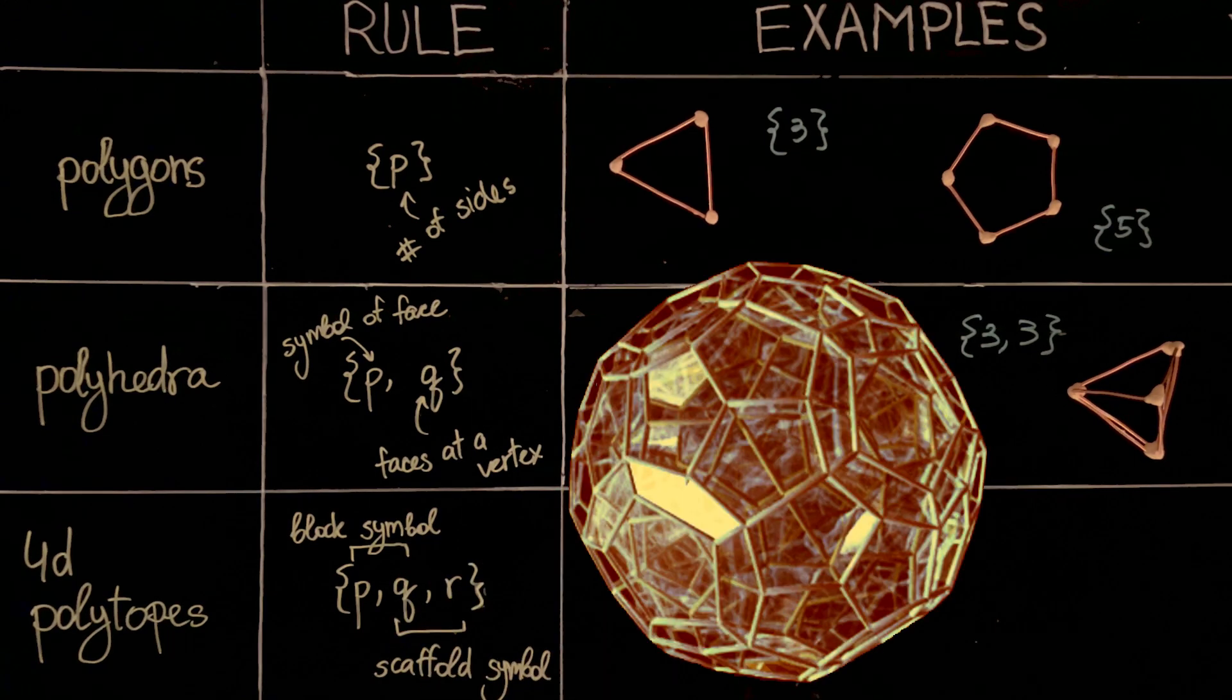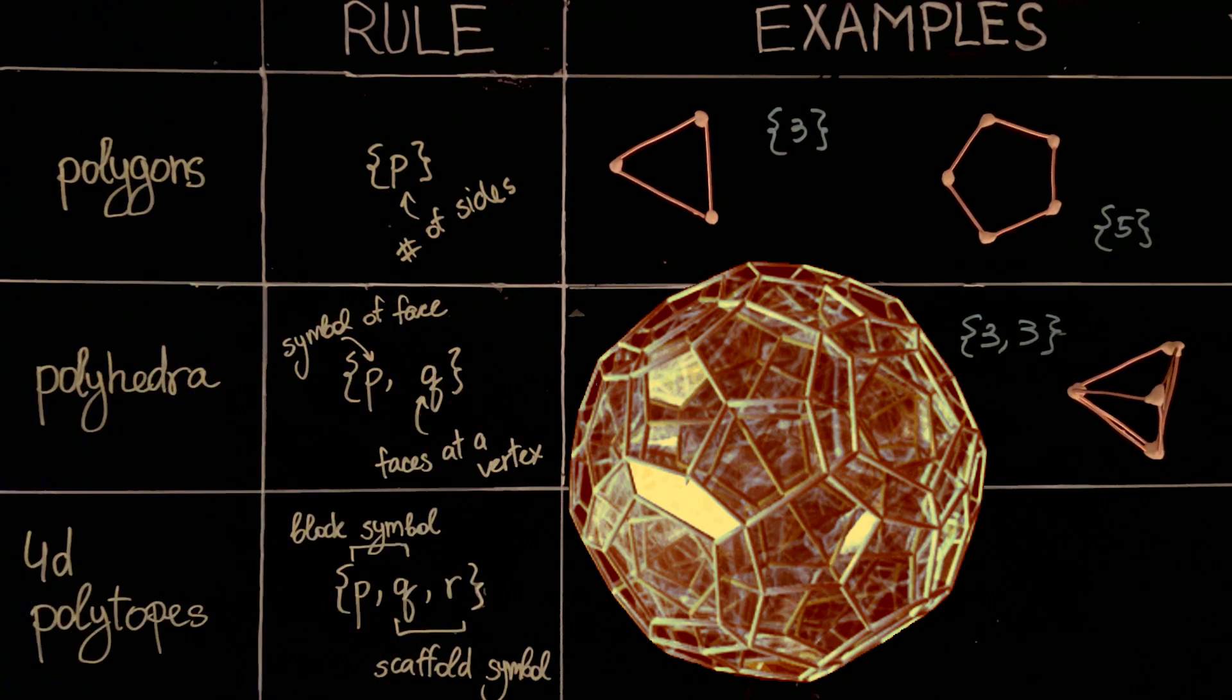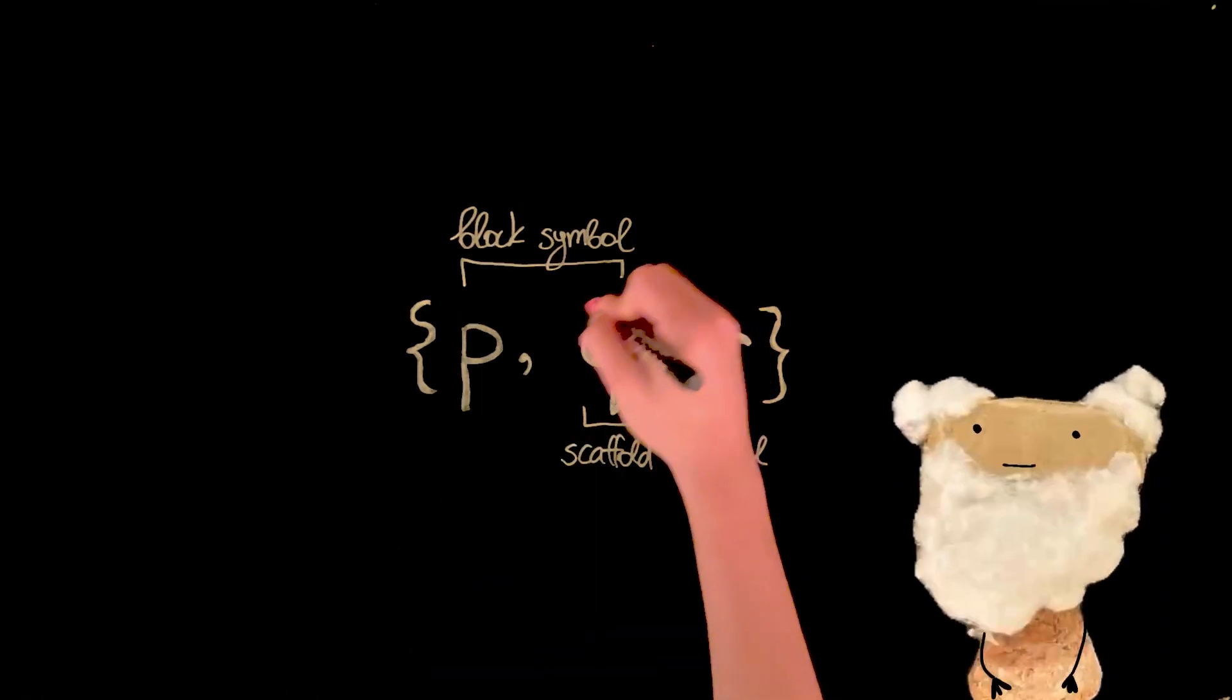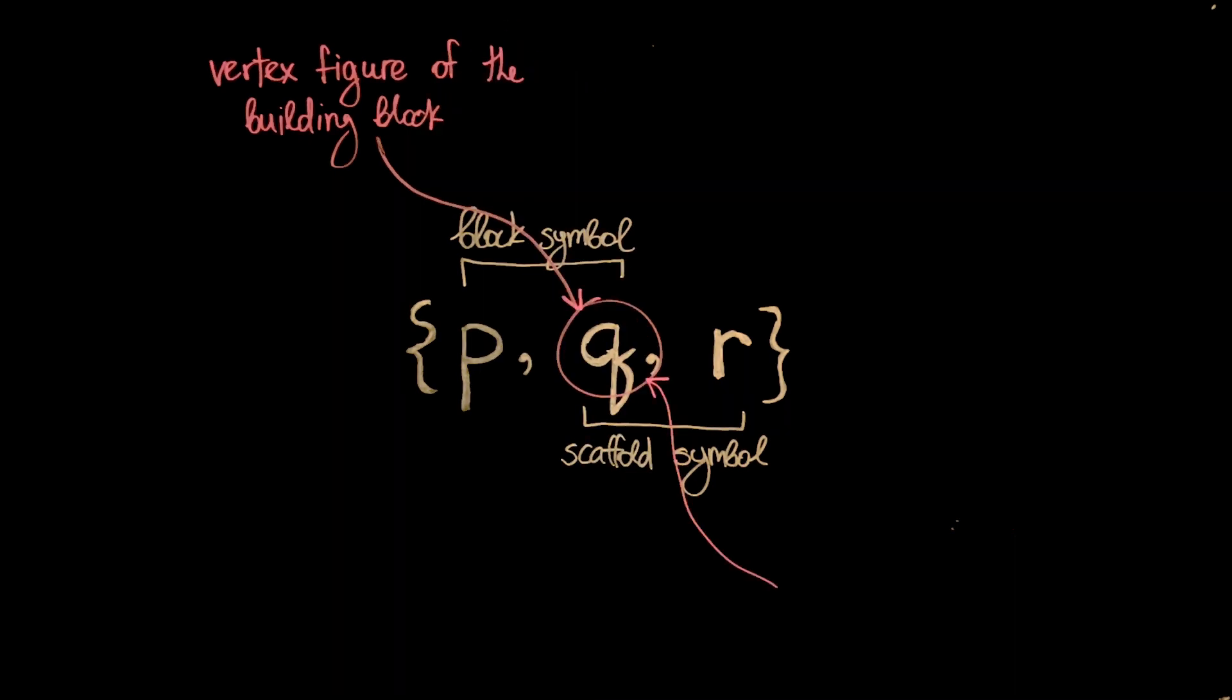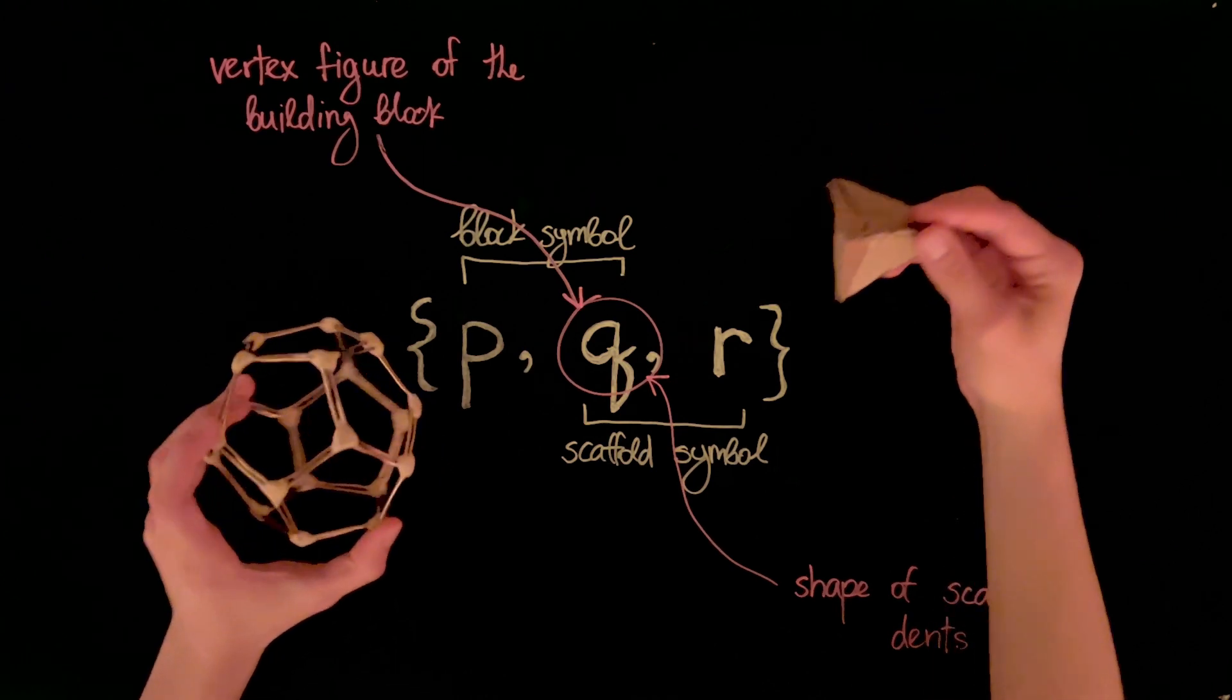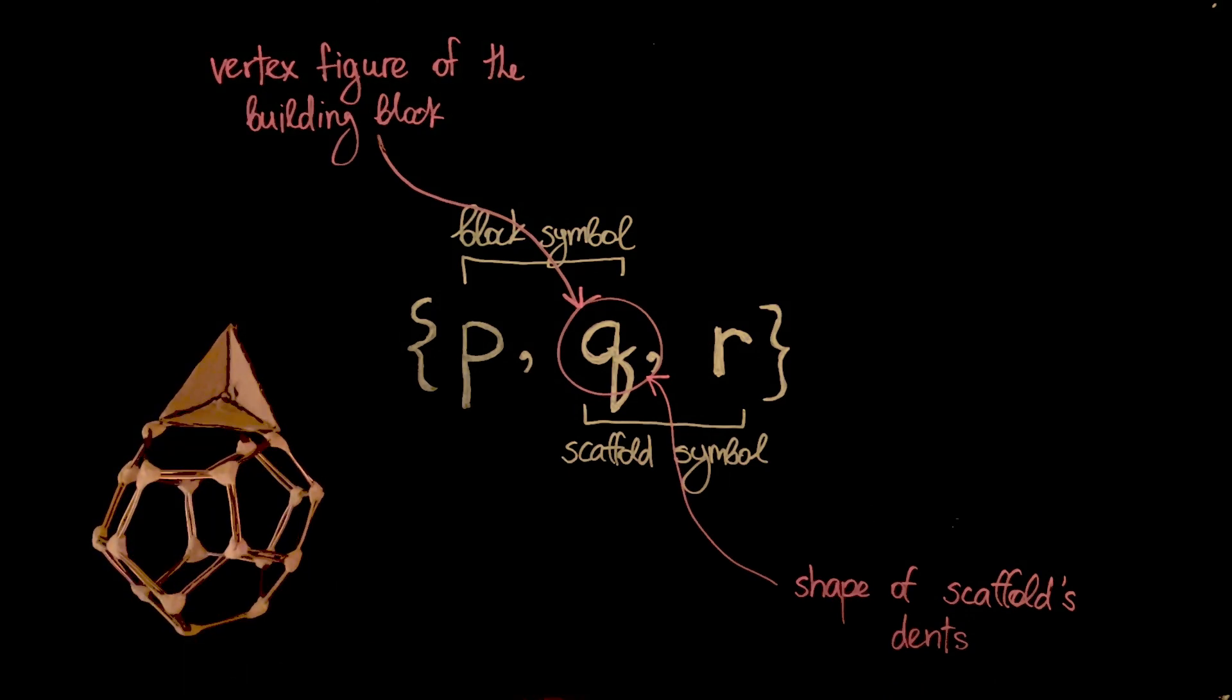In 4D, the Schläfli symbol consists of three values, made by joining the symbol of the building block with the symbol of the vertex figure. How would you label a hyper-dodecahedron? As a reminder, we built it by fitting dodecahedral blocks into a tetrahedral scaffold. Combining the symbols of these polyhedra yields 5,3,3. But you might ask, what if the two symbols don't agree on the middle value? In the first symbol, this number represents how many faces meet at each vertex, or the vertex figure of the building block. In the second, it describes the shape of the scaffold's dents. Why should these two agree?